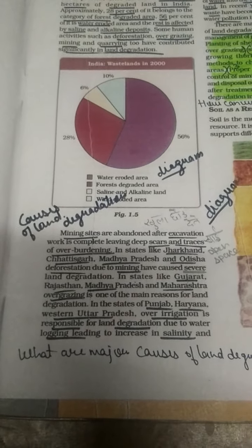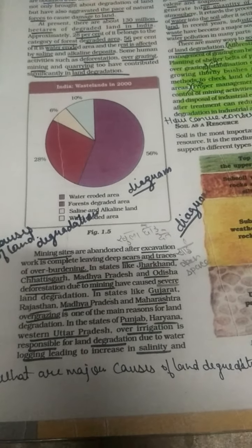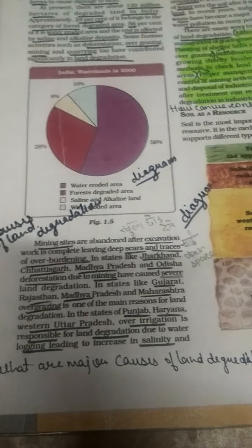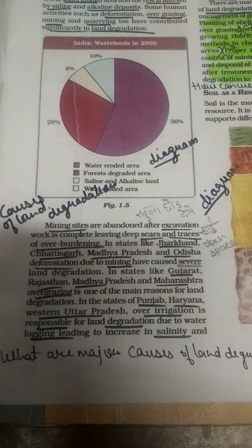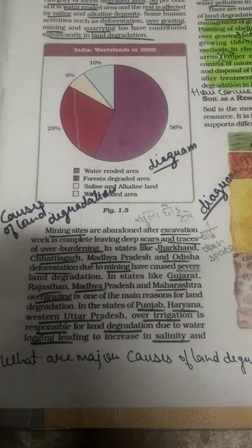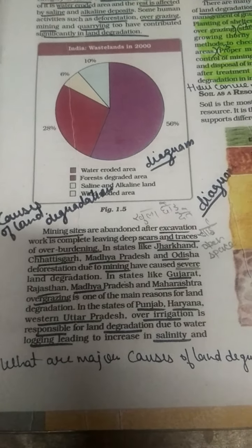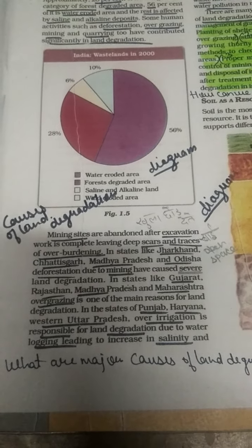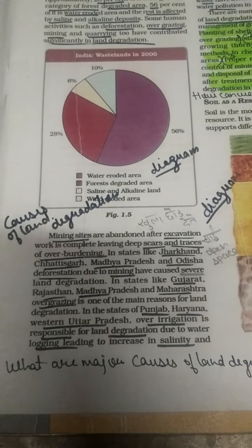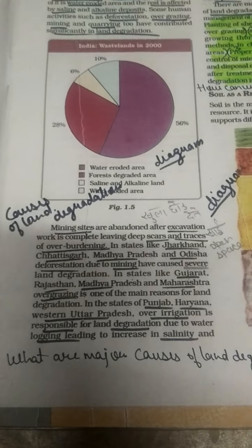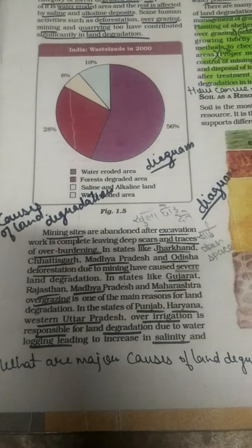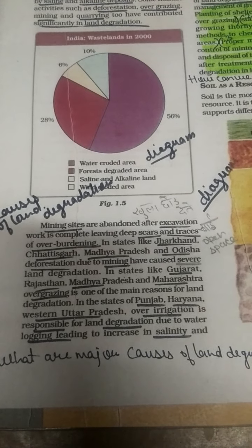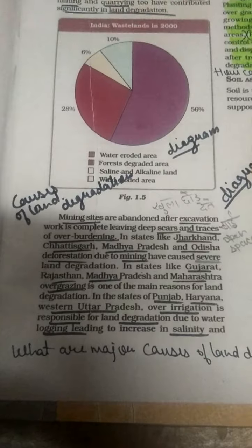Today's topic is the causes of land degradation. One main cause is mining. Mining sites are abandoned after excavation work is complete, leaving deep scars and terraces of overburden. After the mining is done — when we know that at some places we are getting a number of minerals — we start to excavate and take those resources. When the work is complete and all the minerals are extracted, we leave deep scars, release the material, and leave it open, becoming a cause of land degradation.